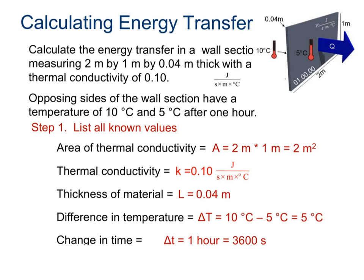So we'll do this example problem. Calculate the energy transfer in a wall section measuring 2 meters by 1 meter by 0.04 meters thick with a thermal conductivity of 0.10 joules per second meter degrees Celsius. Opposing sides of the wall section have a temperature of 10 degrees Celsius and 5 degrees Celsius after one hour.